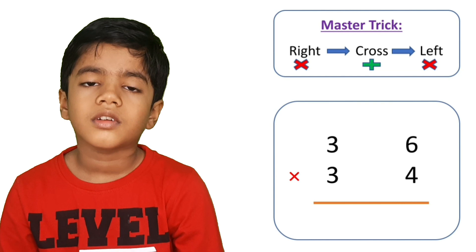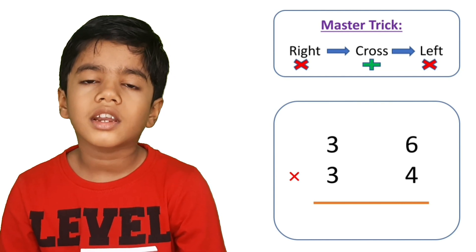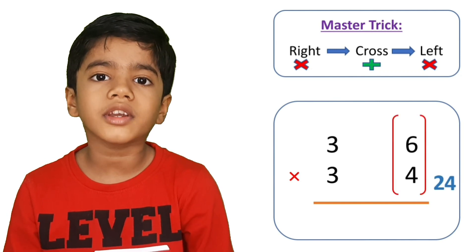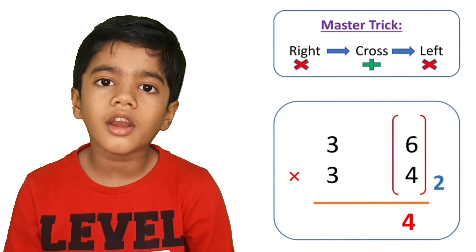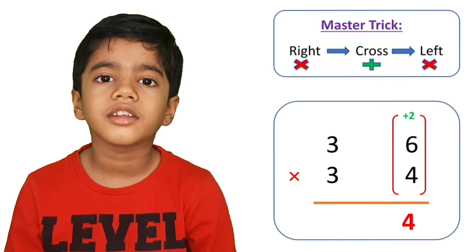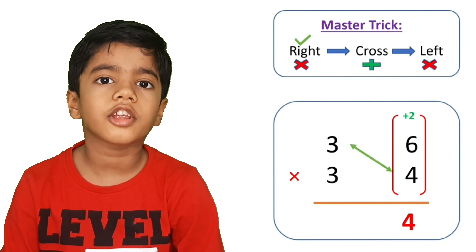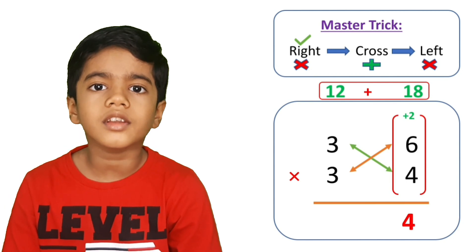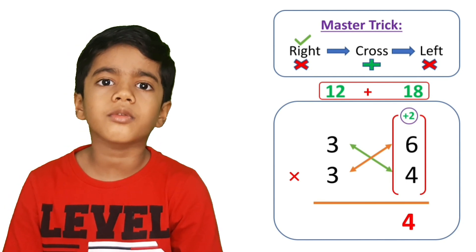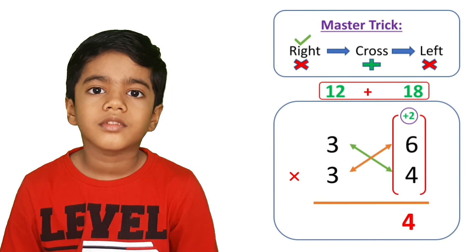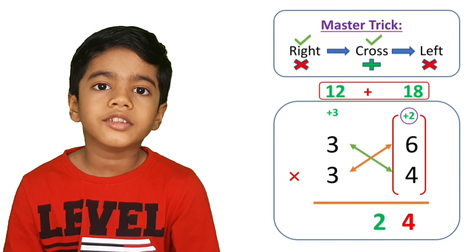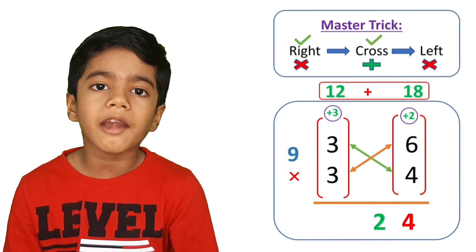Let's take another example: 36 into 34. Right side: 6 times 4 is 24, so write 4 here and take 2 as carry. Now cross: 3 times 4 is 12, 3 times 6 is 18, so 12 plus 18 equals 30, plus 2 carry gives 32. Keep 2 here, take 3 carry. Now left side: 3 times 3 is 9, plus 3 carry equals 12. Write here 12. So the answer is 1224.